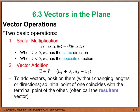Next we look at vector operations. One is scalar multiplication — a scalar is just a real number coefficient. If the scalar is greater than 0, the product has the same direction as the original vector; for example, multiplying a 2-unit vector by 3 gives a 6-unit vector in the same direction. If the scalar is less than 0, the resulting vector points in the opposite direction, so multiplying by negative 3 gives a negative 6 vector in the opposite direction.